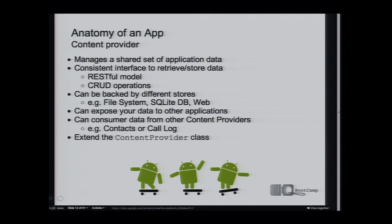Content providers allow you to expose data from your application to other applications and to the system. For example, the system makes extensive use of content providers in the search infrastructure. When you hit search on your Android phone and search through data on the device, it's because of this consistent interface that it knows how to query an app you've just installed. Equally, the system exposes its data to you — you can query the contacts, call log, music, or pictures on the device.